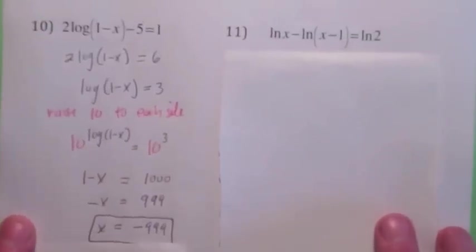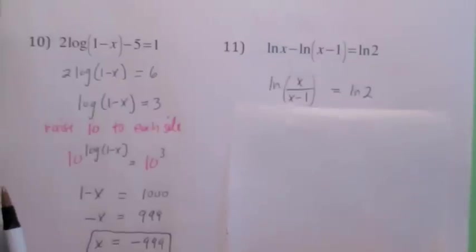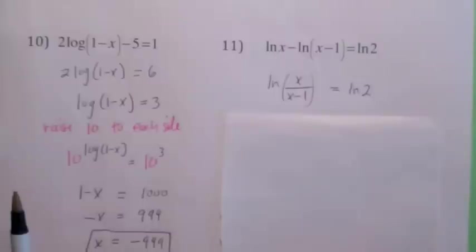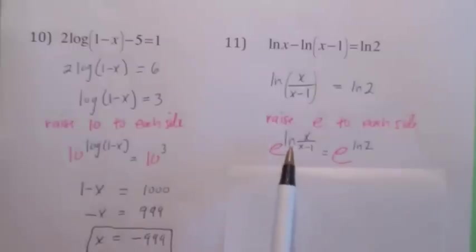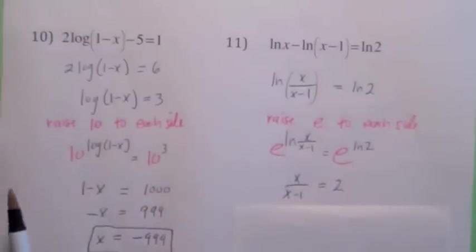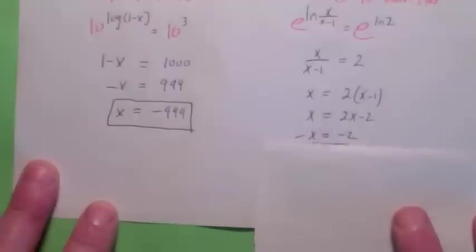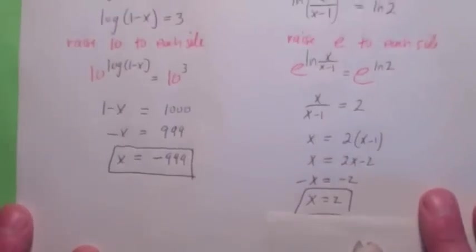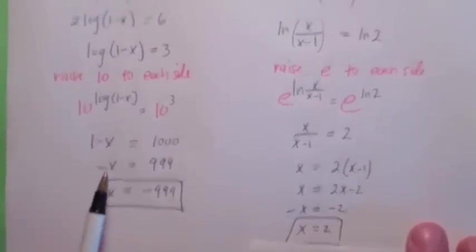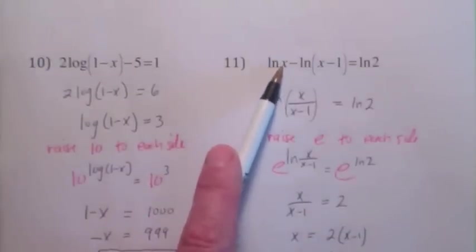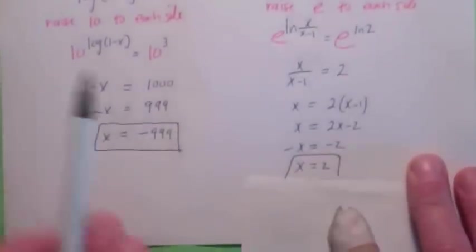If you have more than one logarithm, combine them first. The difference of two logs becomes the log of a quotient. Now raise e to each side and use the rule that e to the ln of something is just that something. So the left side simplifies, the right side becomes e to the ln(2) which is 2. Cross-multiply and use the distributive law. Solving for x gives x equals 2. You must check that your answer is in the domain: this equation requires x greater than 0 and x greater than 1, so x must be greater than 1. Since x equals 2, it's in the domain.